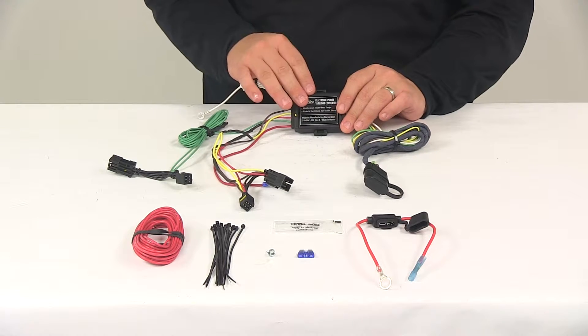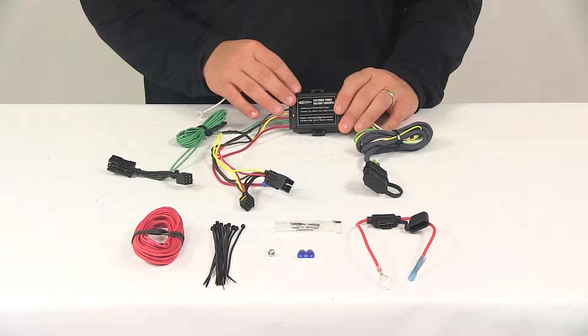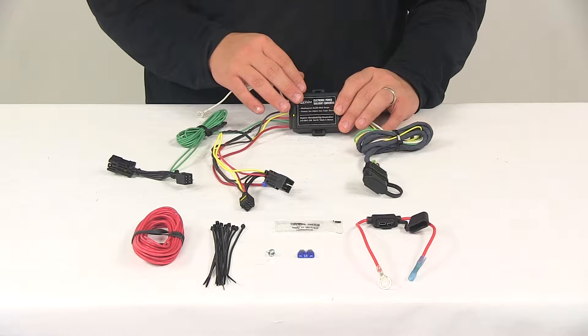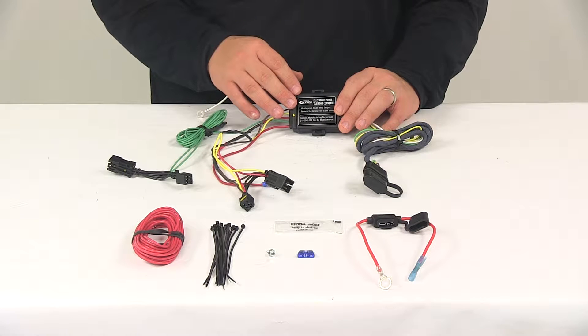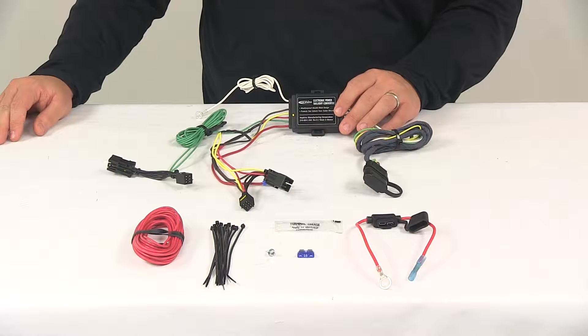The black box is the included taillight converter. This ensures that your vehicle's wiring matches out of your trailers. The powered module connects directly to the vehicle battery through the wiring to avoid overloading your vehicle's electrical system.